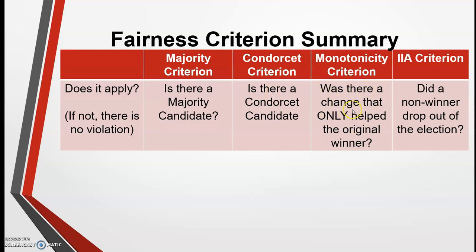Next, you check for whether there was a change that only helped the original winner. The first thing you check for is: is there a re-election, a second election, a recount, or something to indicate that two different elections occurred? If so, then you ask yourself: were there changes that only helped the original winner and no other changes? If that's true, then the monotonicity criterion applies. If not, then you move on.